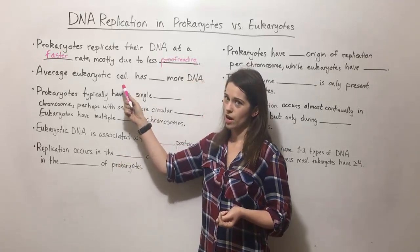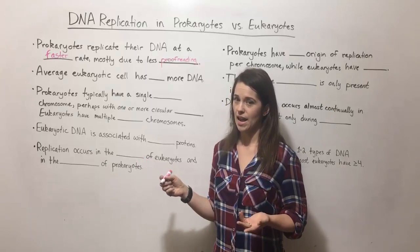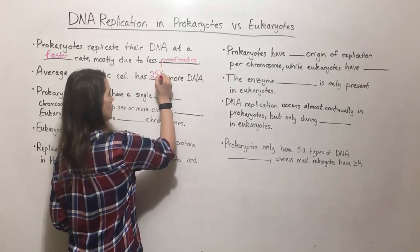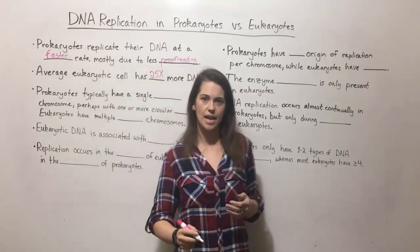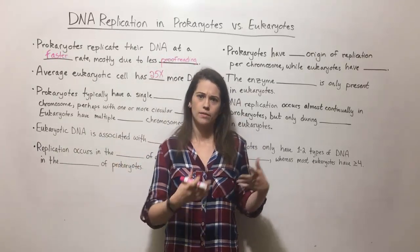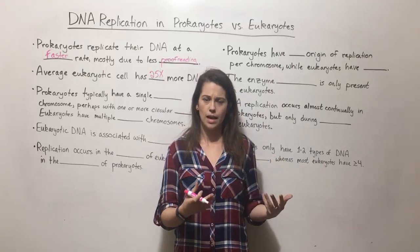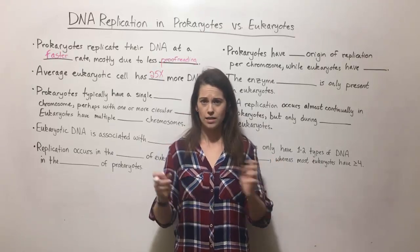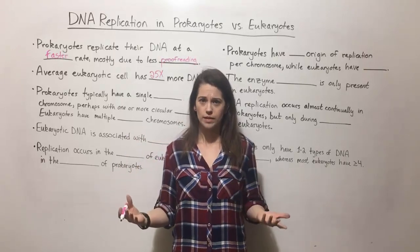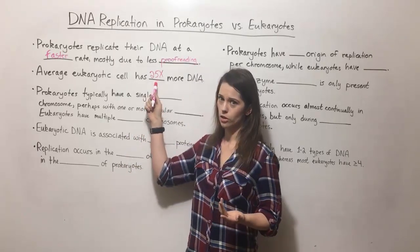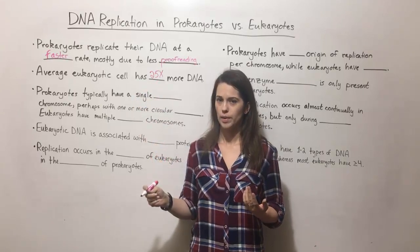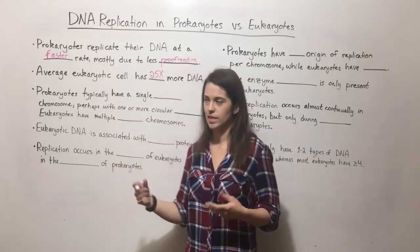The average eukaryotic cell also has a lot more DNA — on average about 25 times more DNA. There's obviously a lot of variation between the amount of DNA in various eukaryotic and prokaryotic cells across different species, but this is an average. This is also something that will slow down eukaryotic replication when there's just that much more DNA to replicate.